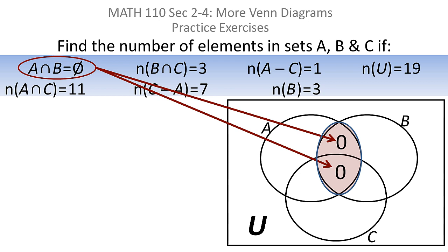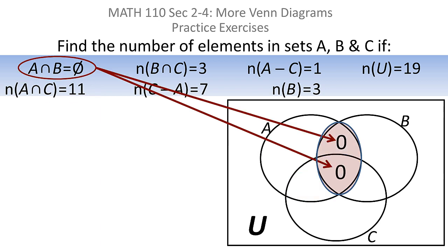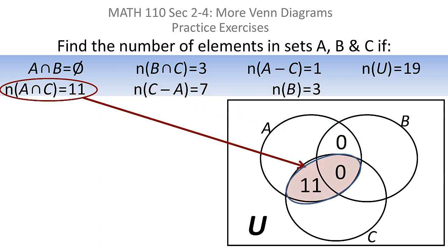So that was actually a pretty easy place to get started. It also gave me the interior, the inside part, which is where I like to start. They also tell me that when I intersect A with C, I'm supposed to get 11. But if you look at it, I already had zero in the interior, the absolute middle, so in order to get 11, all 11 of them have to go there because of that zero in the middle.